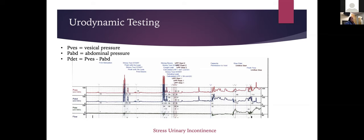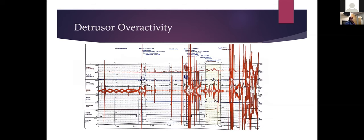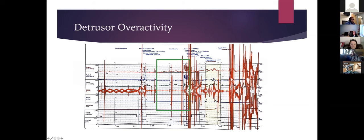This tracing shows detrusor overactivity. Pves and Pabd track together and Pdet is stable — until the patient reports she has to go. At that point, abdominal pressure remains steady (no patient activity), but the bladder itself begins to increase its pressure — that autonomous bladder contraction is what causes the urgency sensation.